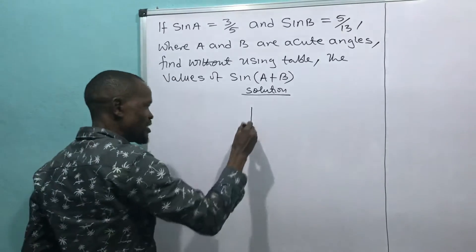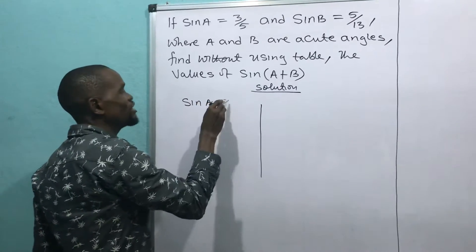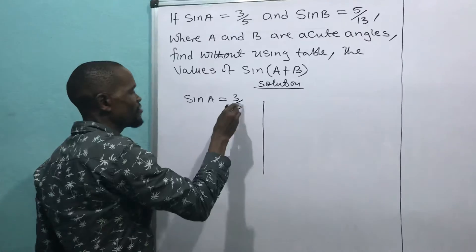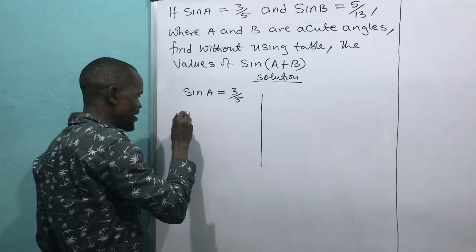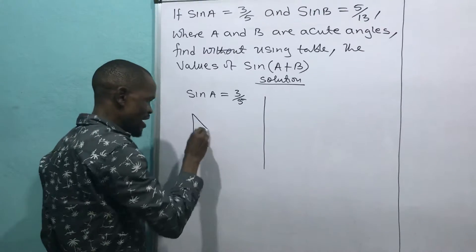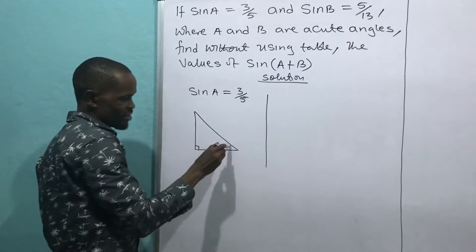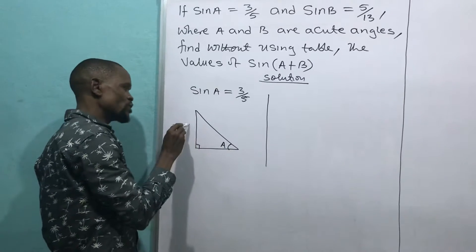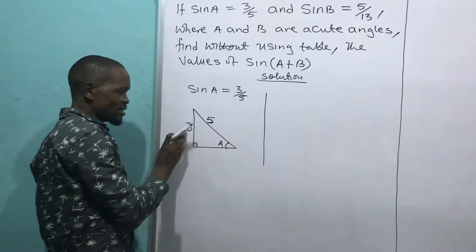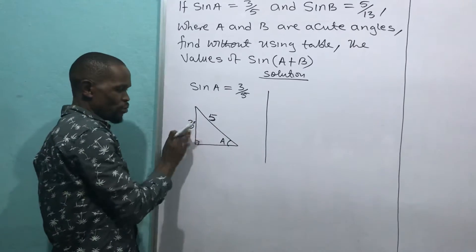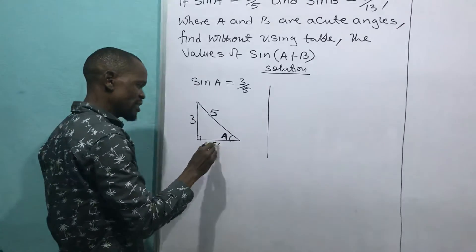I will separate this into two triangles. For triangle A, sin A equals 3 over 5. Since sine means opposite over hypotenuse, the opposite side is 3 and the hypotenuse is 5. I will call the unknown adjacent side X.